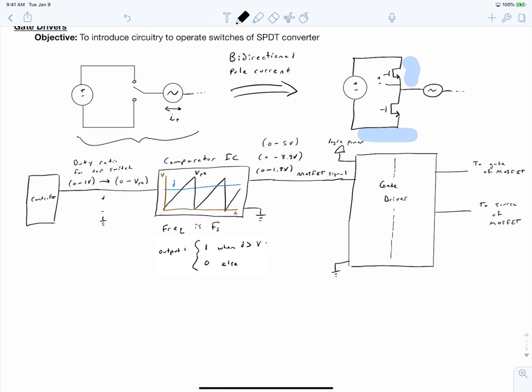On the input side of our gate driver, all signals are referenced to the common of the logic circuit, while on the output side, all signals are referenced to the source of the MOSFET. So we have an isolation boundary, and how this isolation boundary is formed can vary.